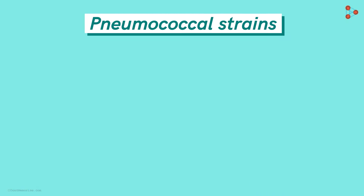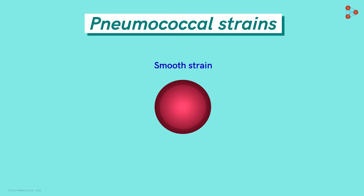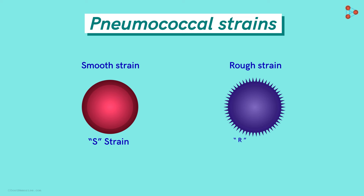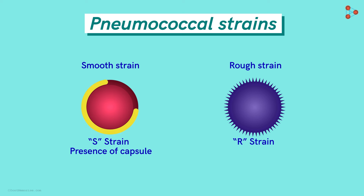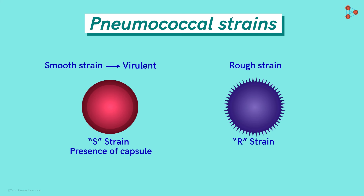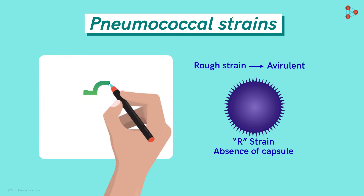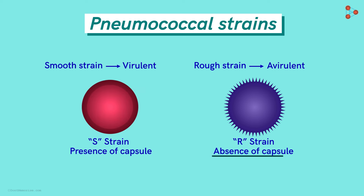Let's get introduced to the two types of pneumococcal strains. This one is a smooth strain, denoted as the S strain, and this one is a rough strain, denoted as the R strain. The smooth strain has a smooth outer surface — it is the capsule around the cell wall which protects it from various threats. The presence of this capsule makes the strain virulent, or strongly infectious. The absence of such a smooth coat makes the strain avirulent, or non-infectious. The absence of the capsule makes it susceptible to the immune cells of the host's body.